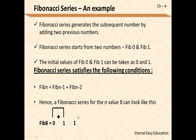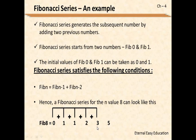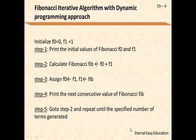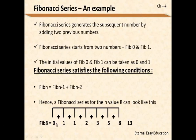The working principle: first it is 0 and 1, summed to get 1. Then 1 and 1 give 2. Then 2 and 1 give 3. Then 3 and 2 give 5. Continuing, the summation reaches 13. That covers 8 numbers — so if n equals 8, we obtain 8 numbers in the Fibonacci series.